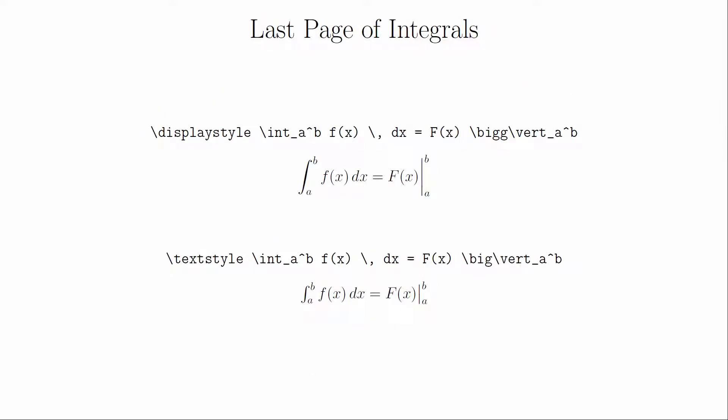The last part of integral notation is the vertical bar we use for the evaluation of the integral. The simplest way to do this is to use bigg with the double g and vert for display style, and big with a single g vert for inline mode. The two bigs come from the same collection of modifiers that we used for parentheses earlier.